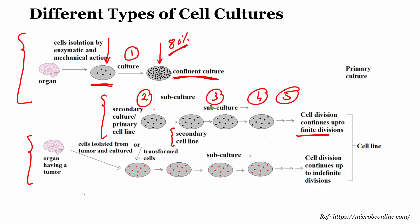The second way is to take an organ or a tumor, isolate cells from the tumor, and further culture them, keeping on culturing further. In this case, cell division continues up to infinite divisions. But at some point you are losing the properties of the original tissues, so we have to restrict ourselves to a few subcultures and then change the cell line or generate another group of cells from the tissue.